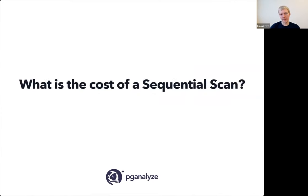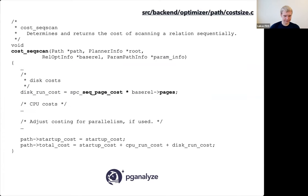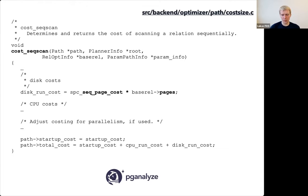What is the cost of a sequential scan? Looking at the Postgres source code, which is actually quite readable, when Postgres considers a sequential scan it looks at your table and asks: how many eight-kilobyte pages does this table consist of? It multiplies that by the sequential_page_cost setting, which defaults to 1. In the simplest case, the disk cost of a sequential scan is just the number of pages in your table. The startup cost is the cost of getting one row, and the total cost is the cost of getting all rows in the table.